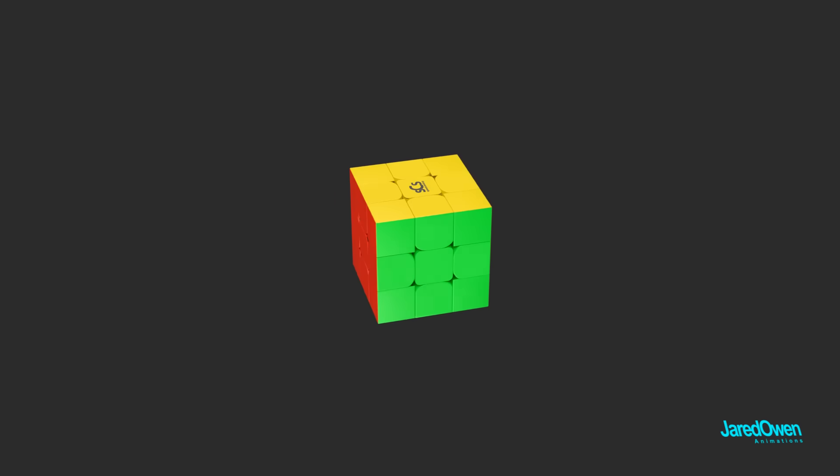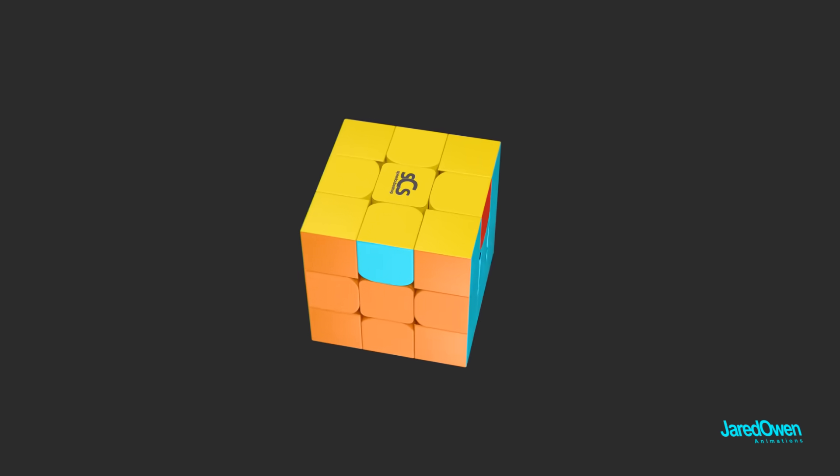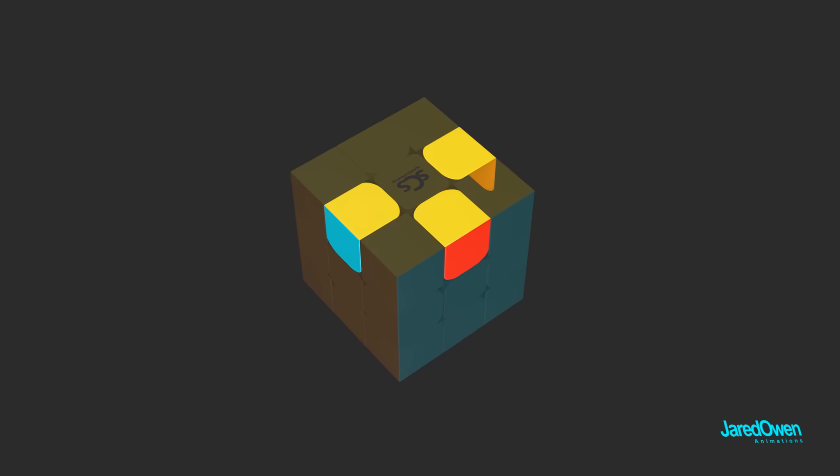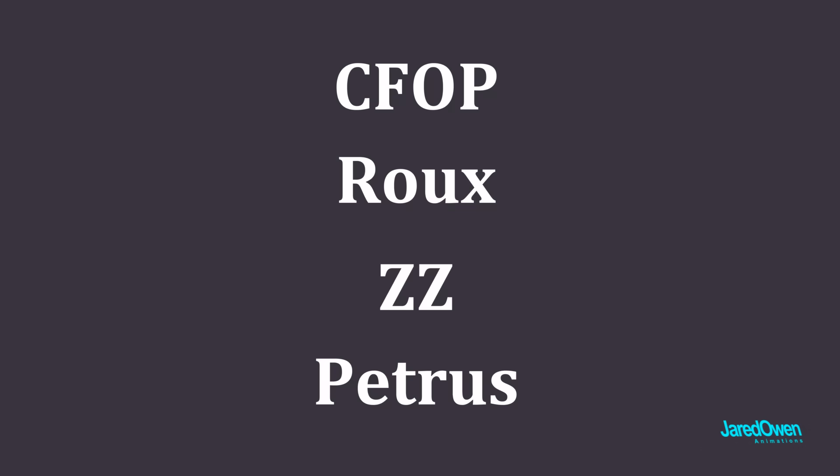To really master this, you'll need to learn algorithms, or a specific set of steps to move the pieces around where you want them to go. For example, one of the last moves might be swapping these three edge pieces around. There's a specific algorithm to do this without messing up any of the other pieces. There are a few different methods for solving the cube, but the most popular one is the one we just demonstrated, CFOP.